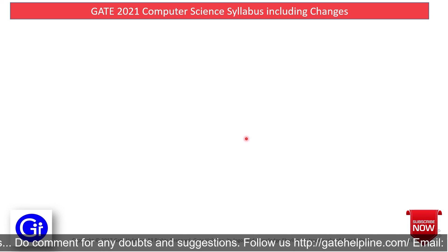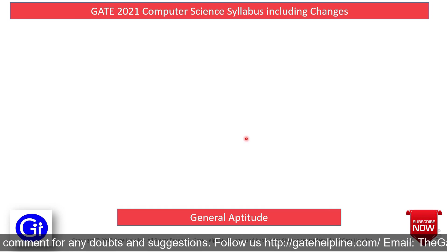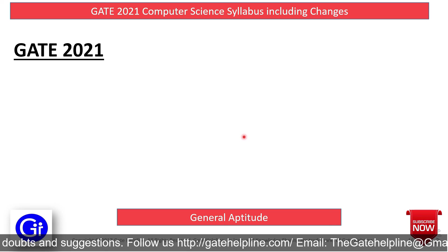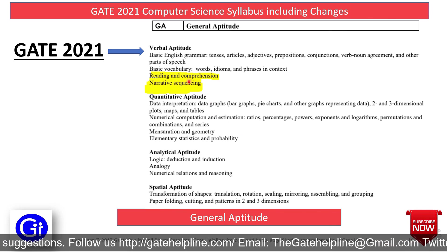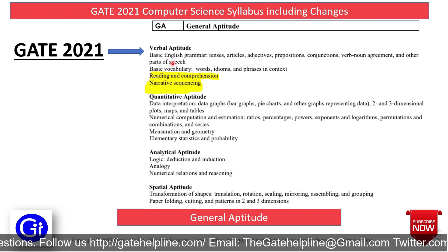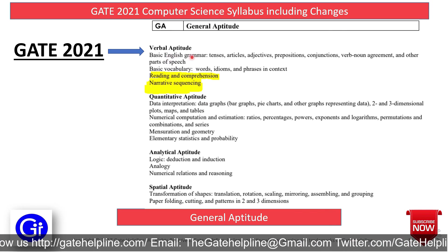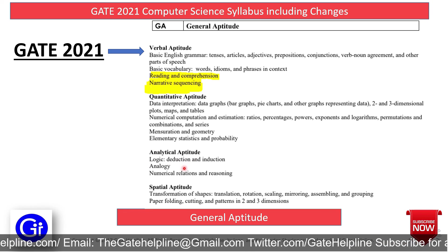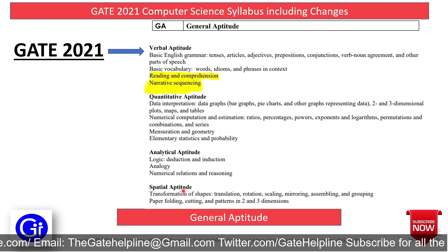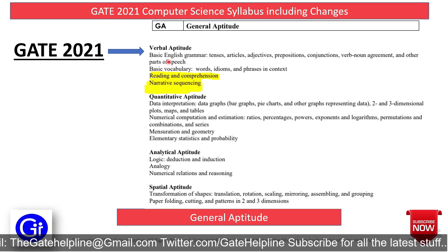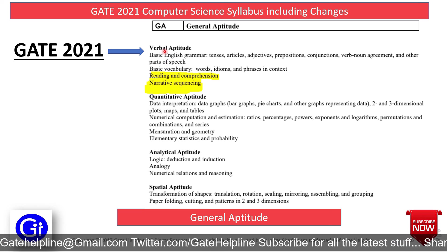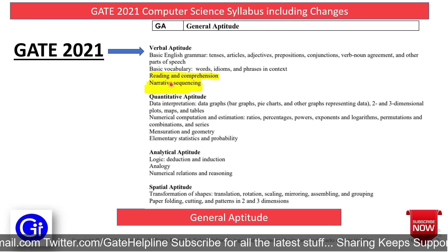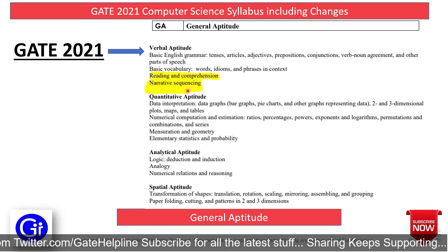The last subject is General Aptitude. The GATE 2021 syllabus is divided into four parts: Verbal Aptitude, Quantitative Aptitude, Analytical Aptitude, and Spatial Aptitude. There is an addition in the Verbal Aptitude section — Reading Comprehension and Narrative Sequencing are added for GATE 2021.